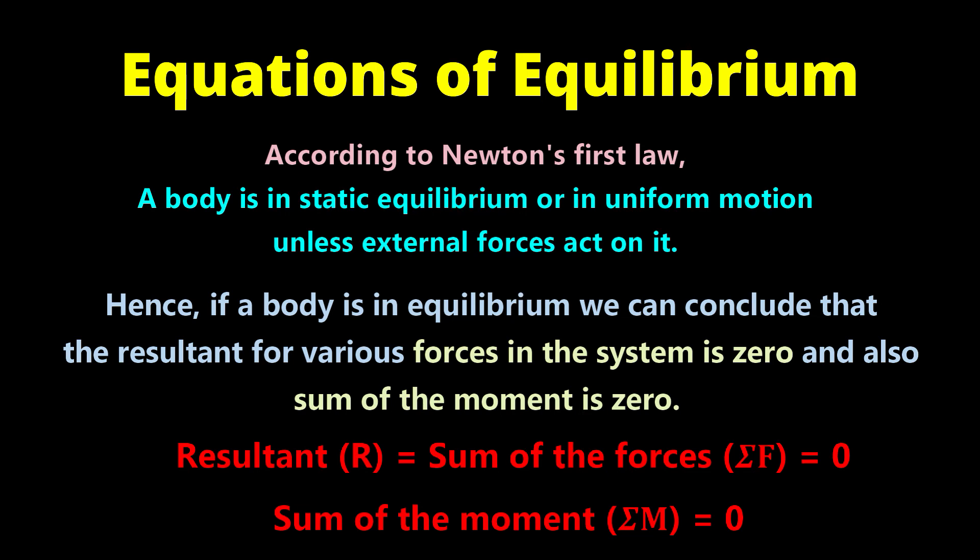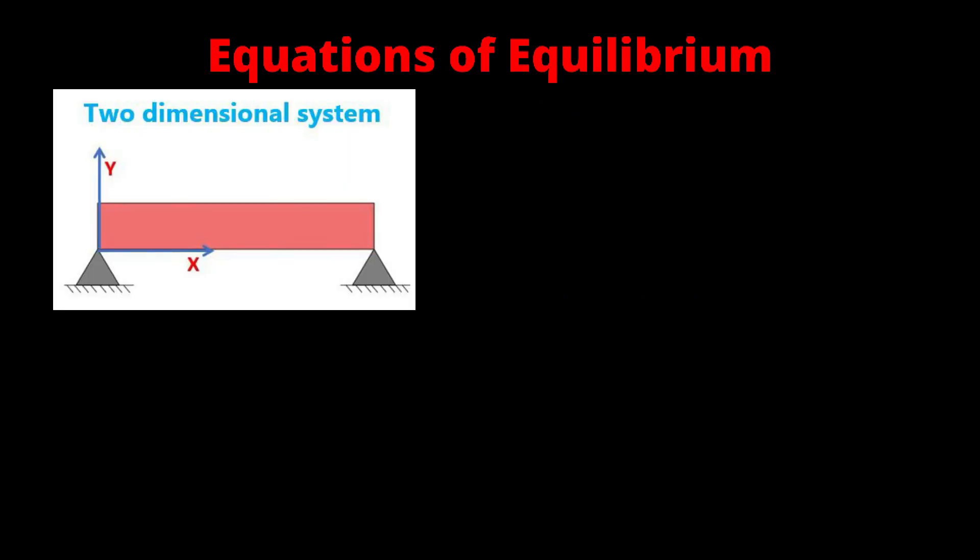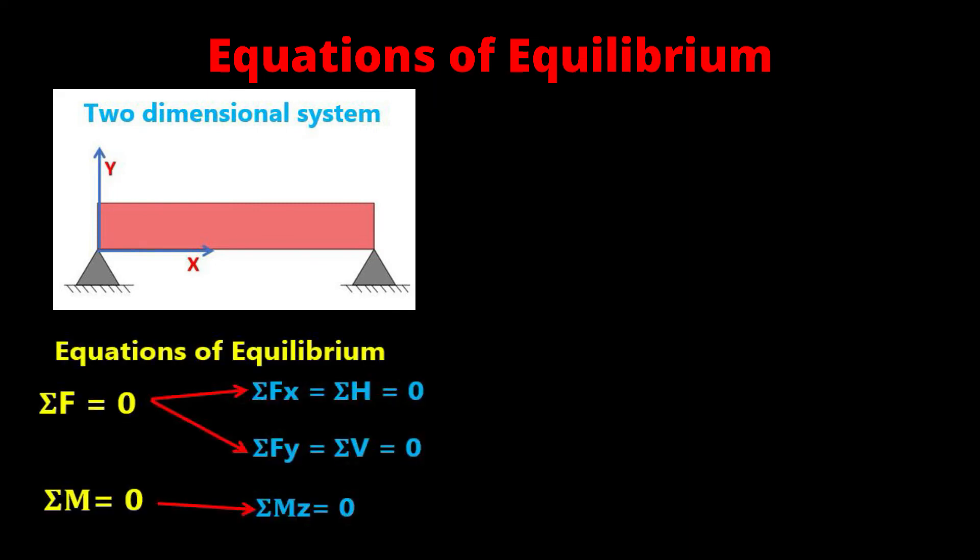If we take a two-dimensional system, it has only x-axis and y-axis, then the equations of equilibrium are: the sum of the forces in x direction, that is horizontal direction, equals zero, and the sum of the forces in y direction, that is vertical direction, equals zero, and sum of the moment of forces equals zero.